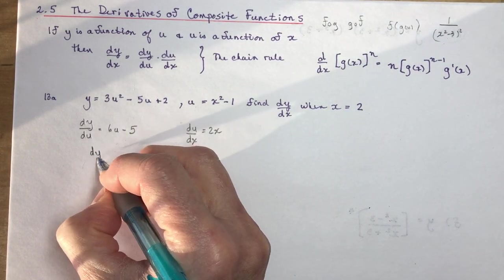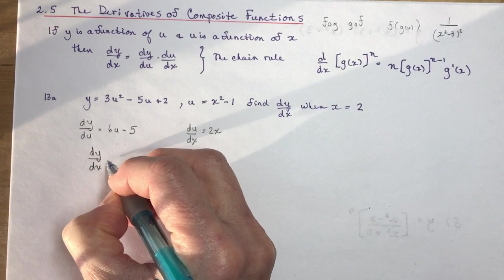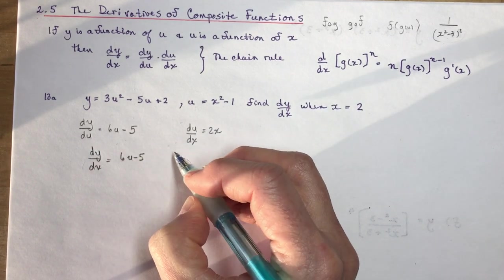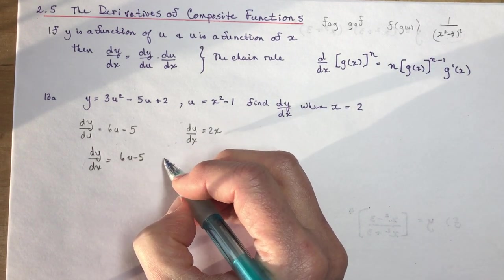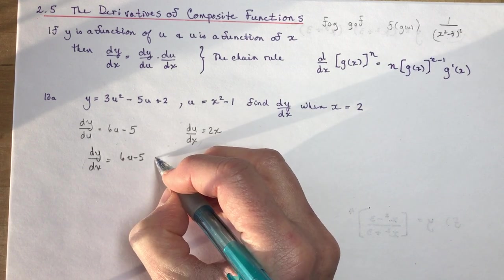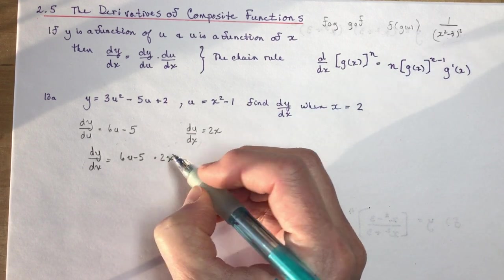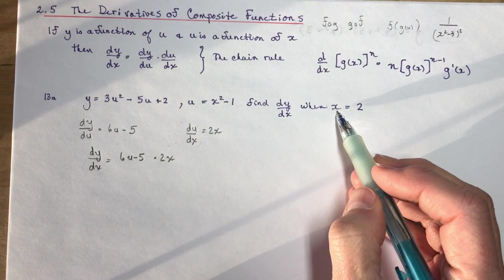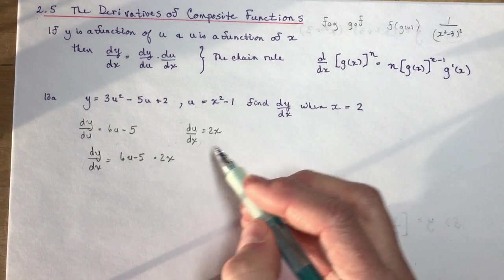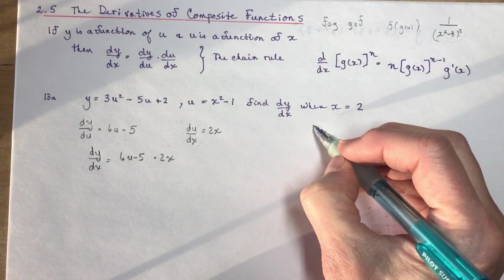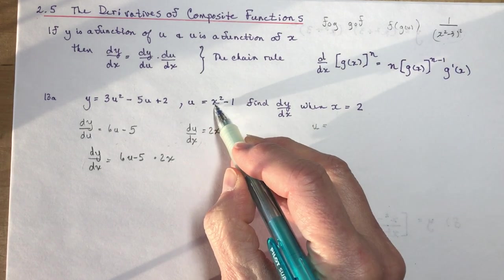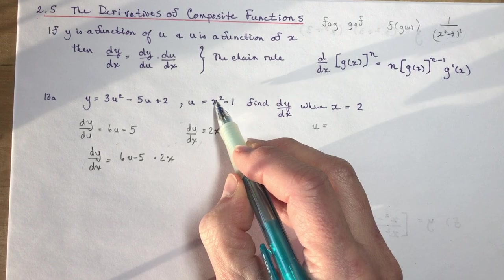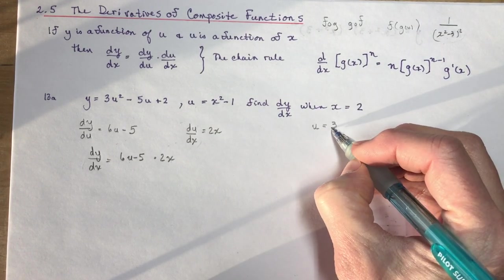And I'm going to multiply that by the du/dx, which is 2x. Now I can't substitute in 2 for u because that's when x is 2, not u. So when x is 2, that means u is going to be, and I have to evaluate it here. So I plug in 2 for x, and I would get 4 - 1 is 3. So u would be 3.